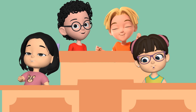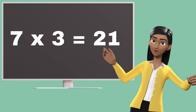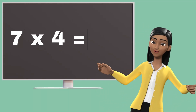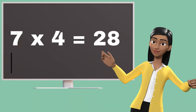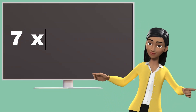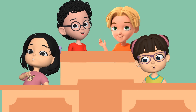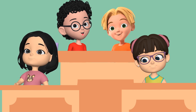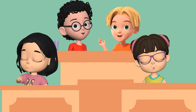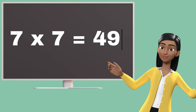Seven twos are fourteen. Seven threes are twenty-one. Seven threes are twenty-one. Seven fours are twenty-eight. Seven fours are twenty-eight. Seven fives are thirty-five. Seven fives are thirty-five. Seven sixes are forty-two. Seven sixes are forty-two.